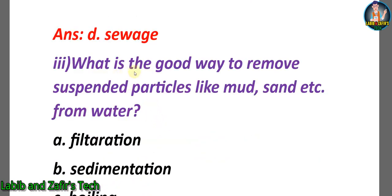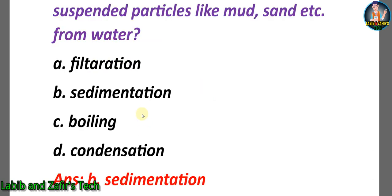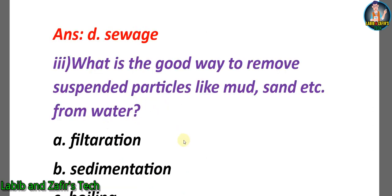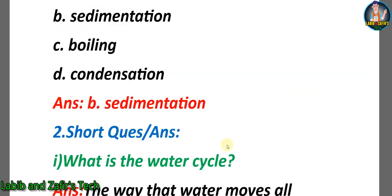Question three: What is the good way to remove suspended particles like mud, sand, etc., from water? The four purification methods given are filtration, sedimentation, boiling, and one that is not a purification method. The correct answer is B) Sedimentation, because by sedimentation we can remove suspended particles like mud and so on from water.